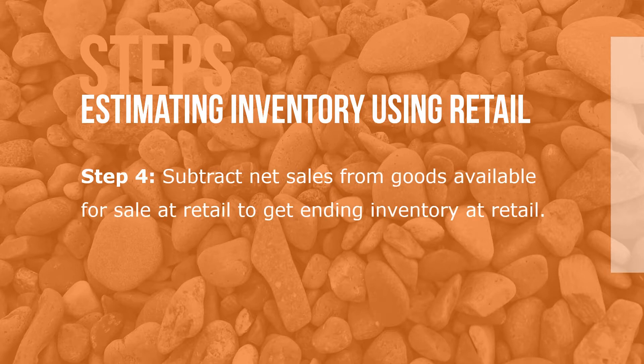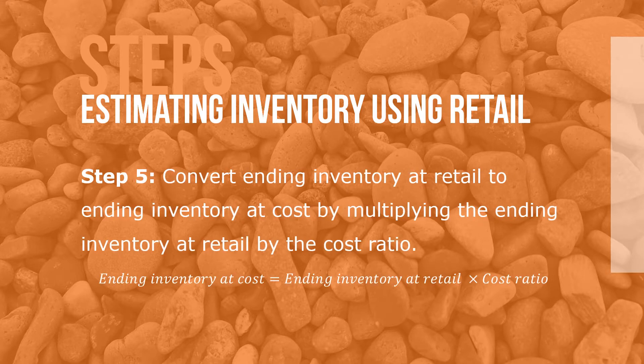Step 3: Calculate the cost ratio. Step 4: Subtract net sales from goods available for sale at retail to get ending inventory at retail. Step 5: Convert ending inventory at retail to ending inventory at cost by multiplying the ending inventory at retail by the cost ratio, where ending inventory at cost equals ending inventory at retail times cost ratio.